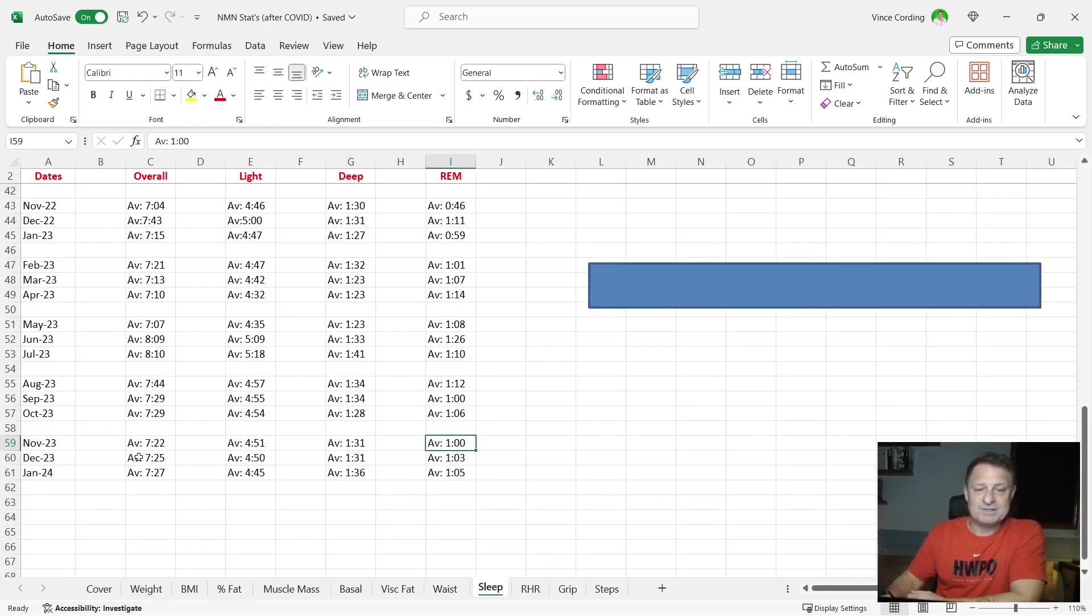In December, the average was seven hours and 25. So good between seven and eight. My light sleep, four hours 50. My average deep sleep again was one hour and 31, which is good over an hour. This is well over an hour. And my REM sleep here, which I want to be over an hour was one hour and three minutes again, which is great.